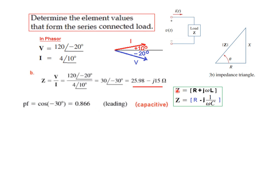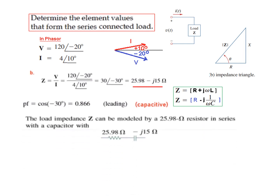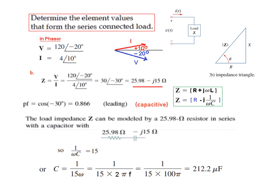This confirms it is a capacitive circuit. We can draw resistance and capacitive reactance. Equating: 15 = 1/(ωC), so C = 1/(15ω) = 1/(15 × 2πf). With f = 50 Hz, the capacitance works out to 212.2 microfarads.